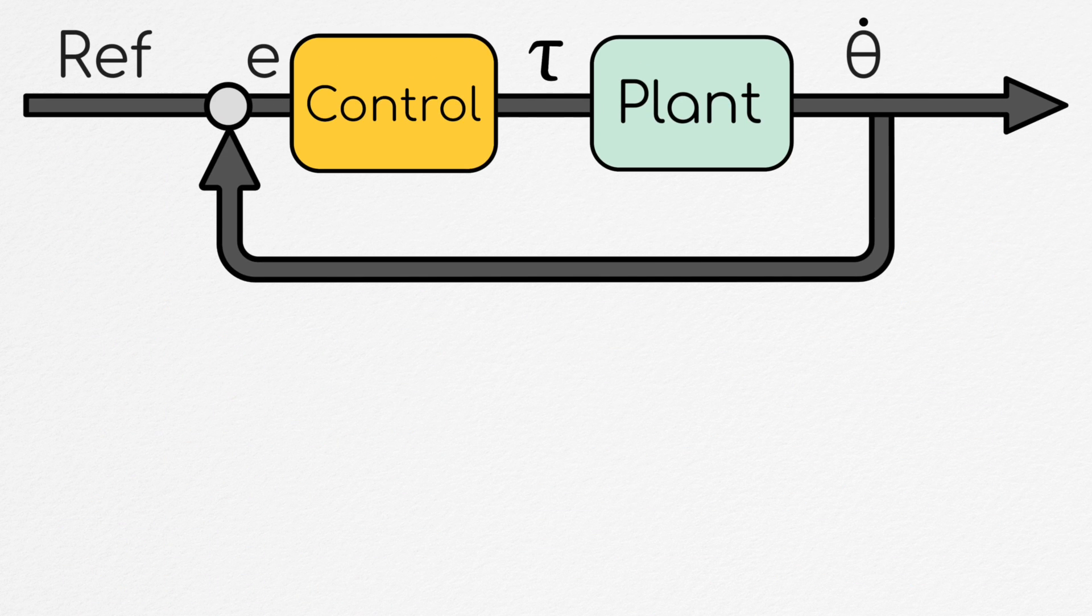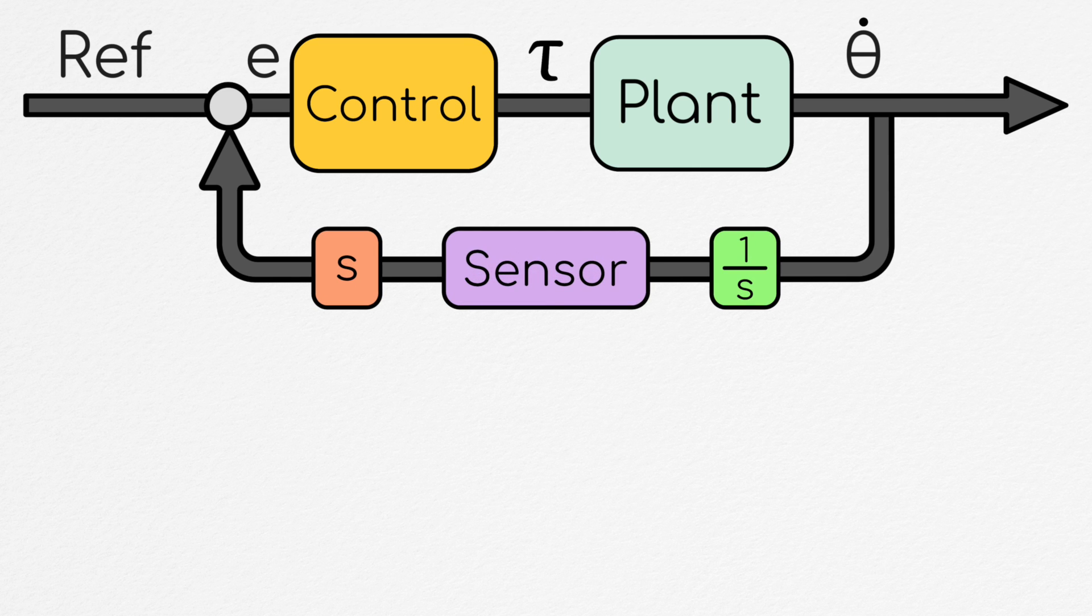This is made worse by the fact that, in general, most servo systems sense position directly then differentiate to get a velocity signal. This means that noise in your sensing will be amplified, potentially making your error term and the input to your controller quite noisy.